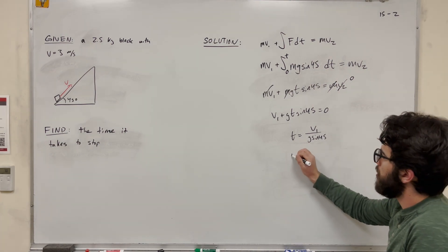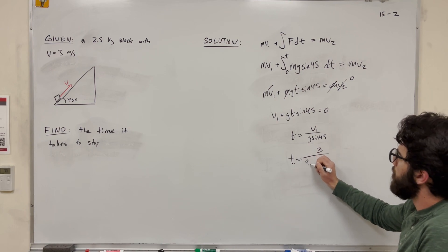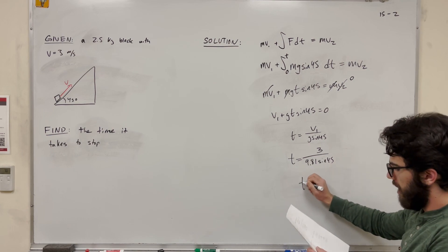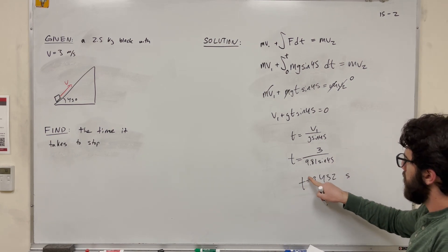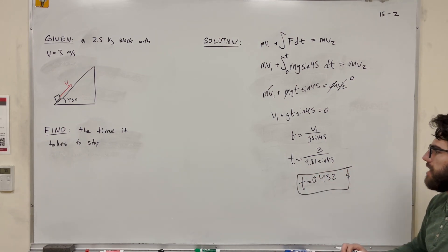Okay, then let's plug in our numbers. So T is equal to velocity initial is 3 meters per second. Gravity is 9.81. Sine of 45. Plug this in, you get 0.432 seconds. Hopefully that's legible. That's pretty hard to read. 0.432 seconds is how long it takes.